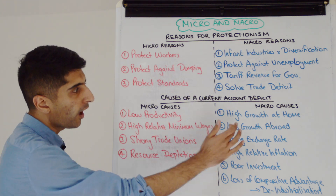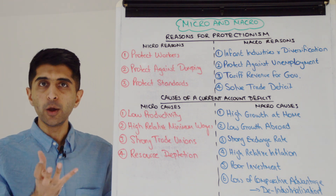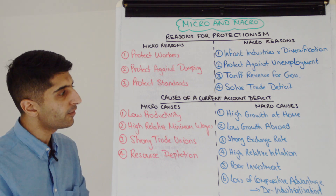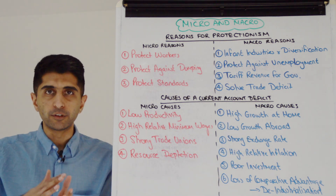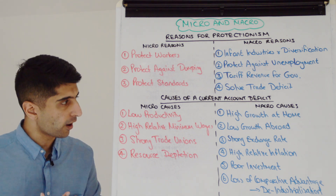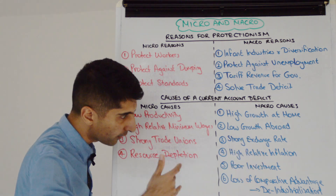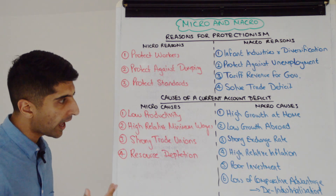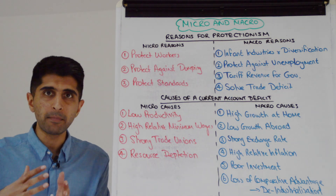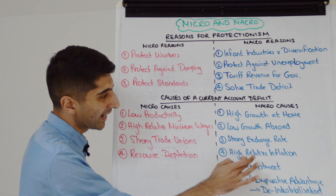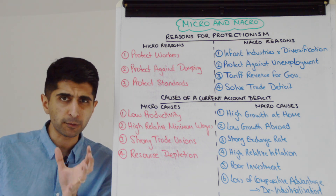What about macro causes of a current account deficit? High economic growth at home means high incomes at home, which means sucking in more imports. Low growth abroad means less demand for our exports, driving a current account deficit. A strong exchange rate can also do that.